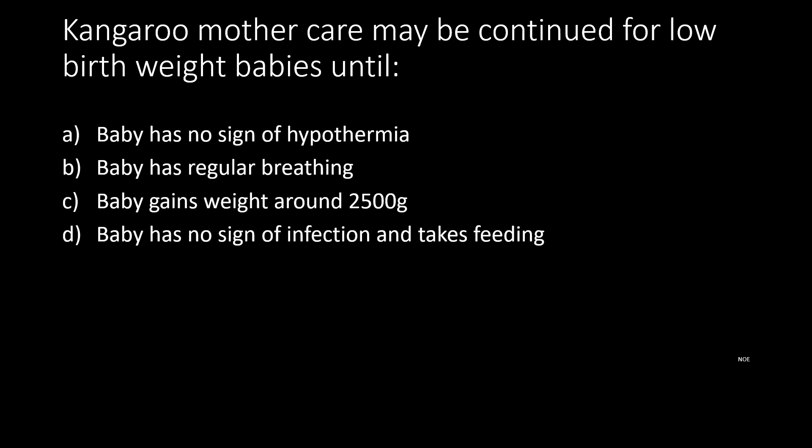Continue follow-up of low birth weight babies until: option A baby has no sign of hypothermia, option B baby has regular breathing, option C baby gains weight around 2500 grams, option D baby has no sign of infection and takes feeding. The answer is baby gains weight around 2500 grams.